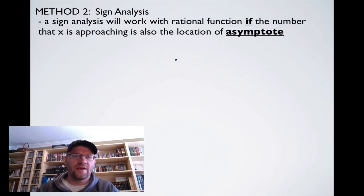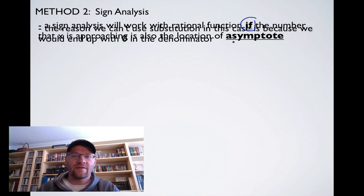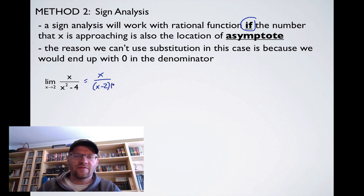Our second method is a sign analysis, and a sign analysis will work with rational functions if the number that x is approaching is also the location of the asymptote. The reason we can't use substitution in this case is because we would end up with a 0 in the denominator. So here's our example: limit as x approaches 2 of x divided by x squared minus 4. If we were to factor this thing, it would be x over (x minus 2)(x plus 2). And here's where you see if we make a direct substitution, we get 0.